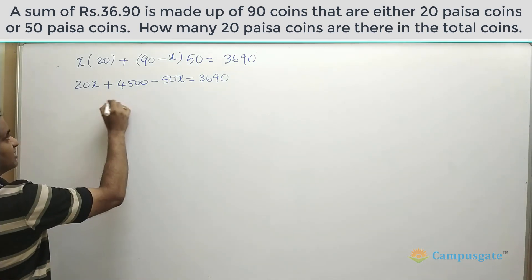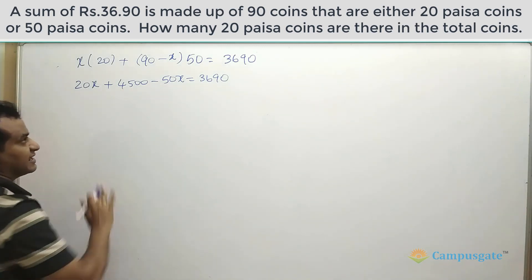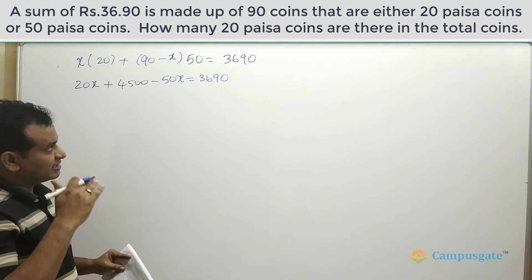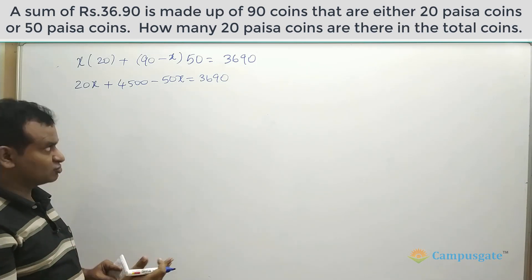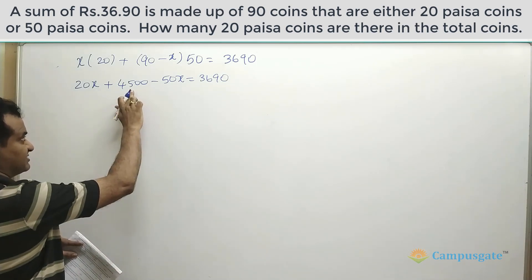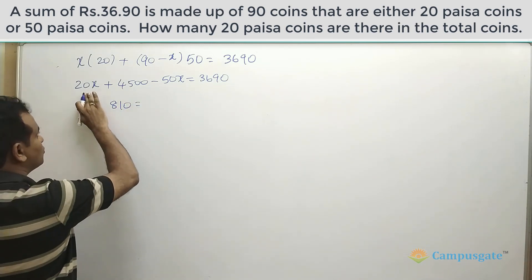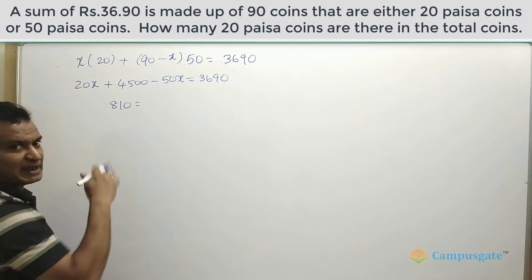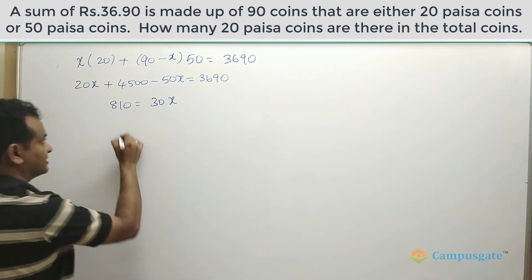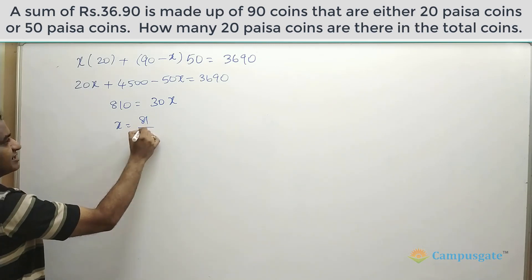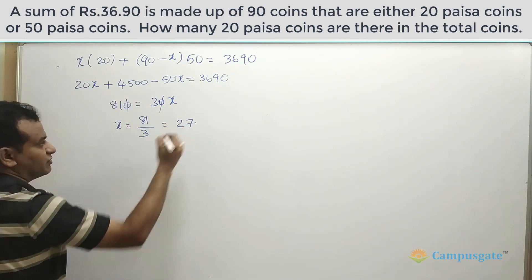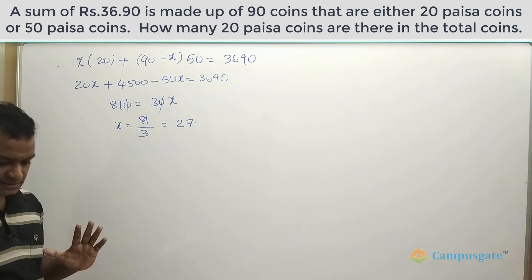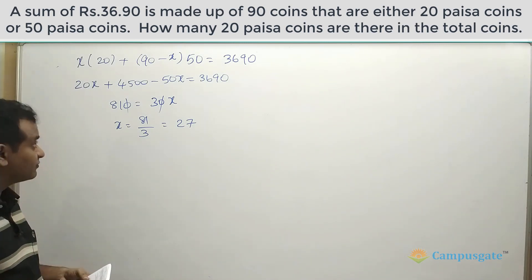Simplifying the equation gives 20x plus 4500 minus 50x equals 3690. So 4500 minus 3690 equals 810, which equals 30x. Therefore x equals 810 divided by 30, which gives you 27. So there are a total of 27 twenty-paisa coins. This is the traditional algebraic way of solving this question.